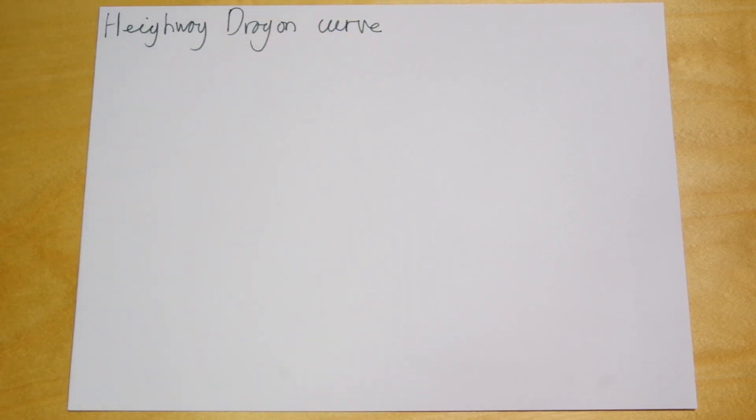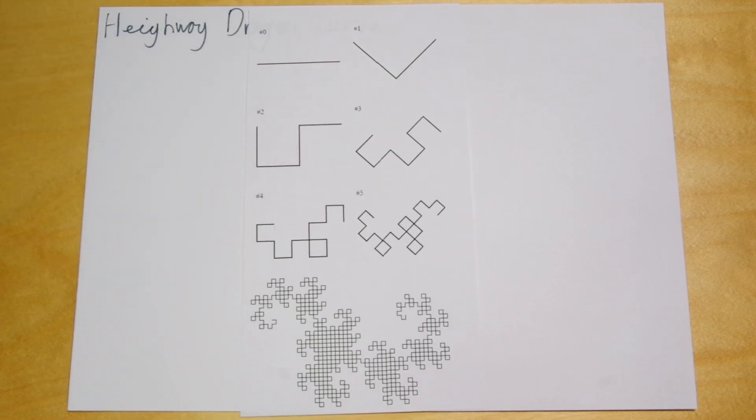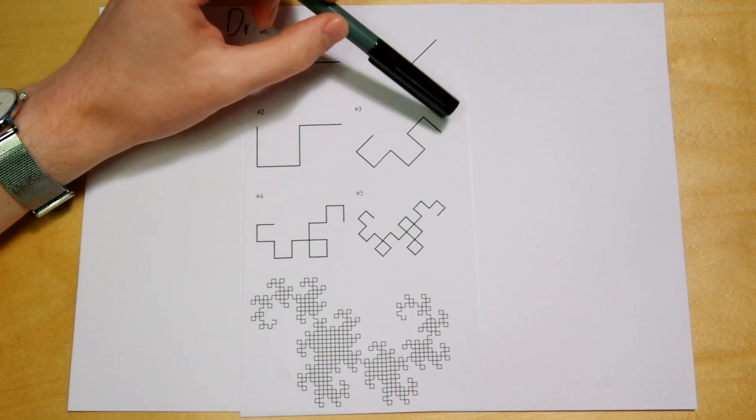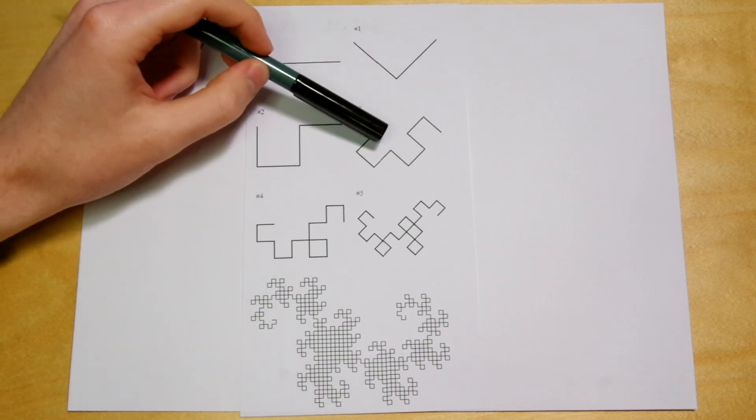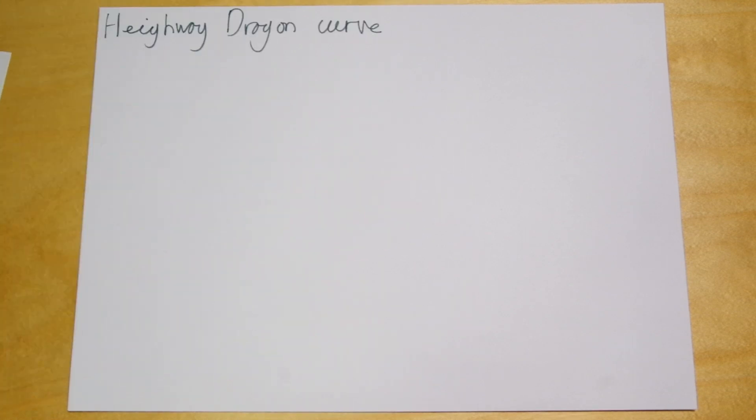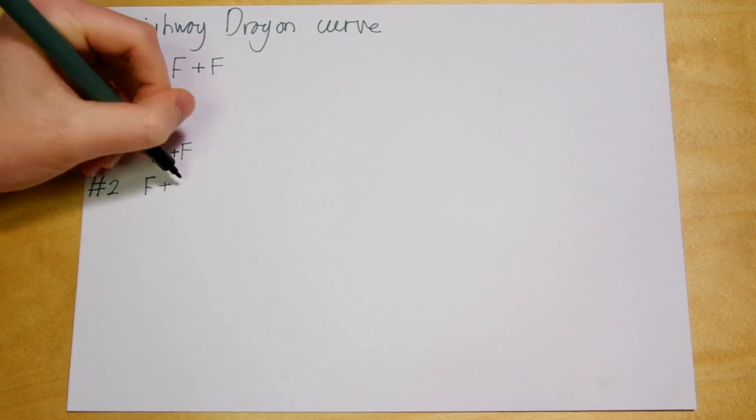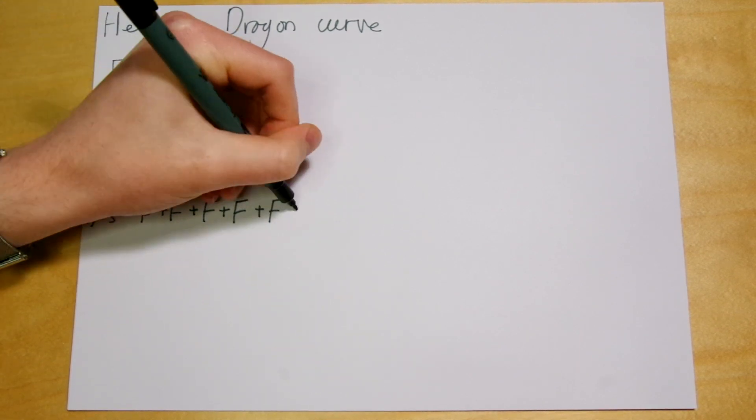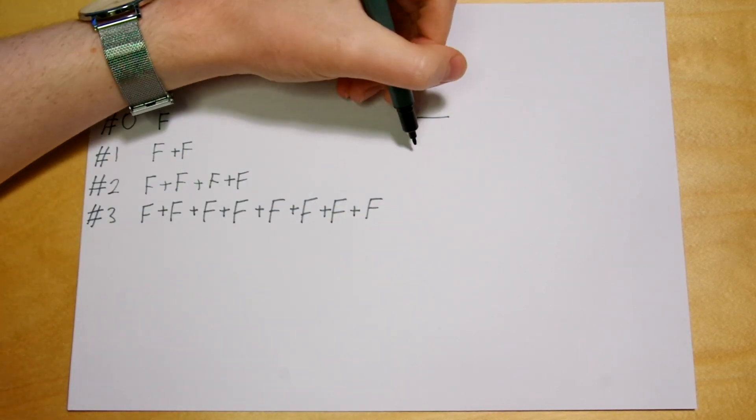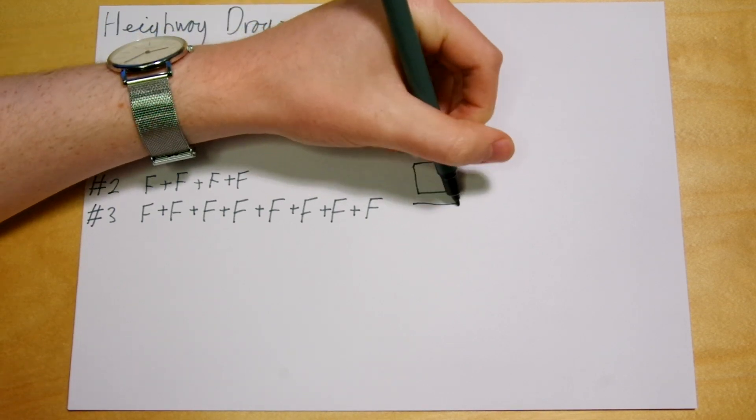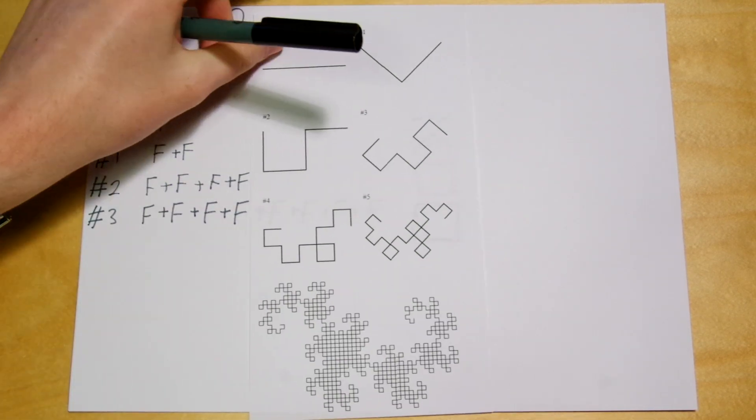Let's start by working out how to draw the highway dragon curve, which looks like this. The basic idea of the fractal is that one line is replaced by two, which are at right angles to each other. So the best place to start is to write an L system that produces that. So the way we'd express that is by replacing F, which means a line, with F plus F. And if we work out a few iterations with this rule, we get these symbols. Unfortunately, these just mean drawing squares after the second iteration. So we need to try something else.